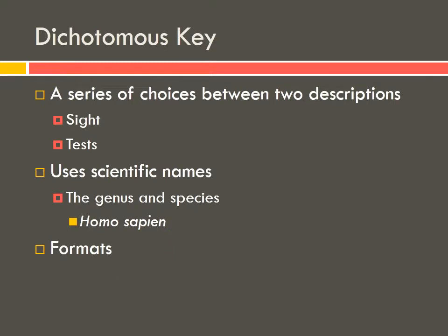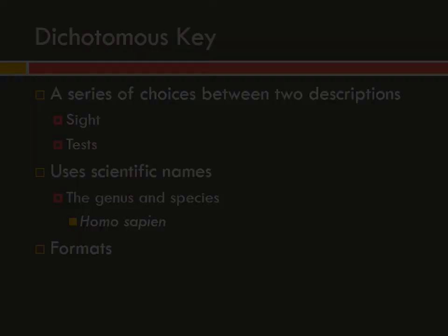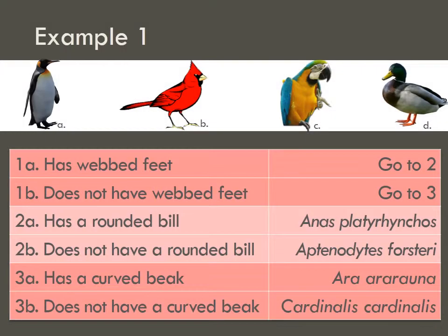Dichotomous keys can also come in several different formats. I'm going to show you two of the most common formats as examples today. For our first example, we are going to try to find the scientific name of one of these four unknowns. We're going to choose just one for now — let's go with C.